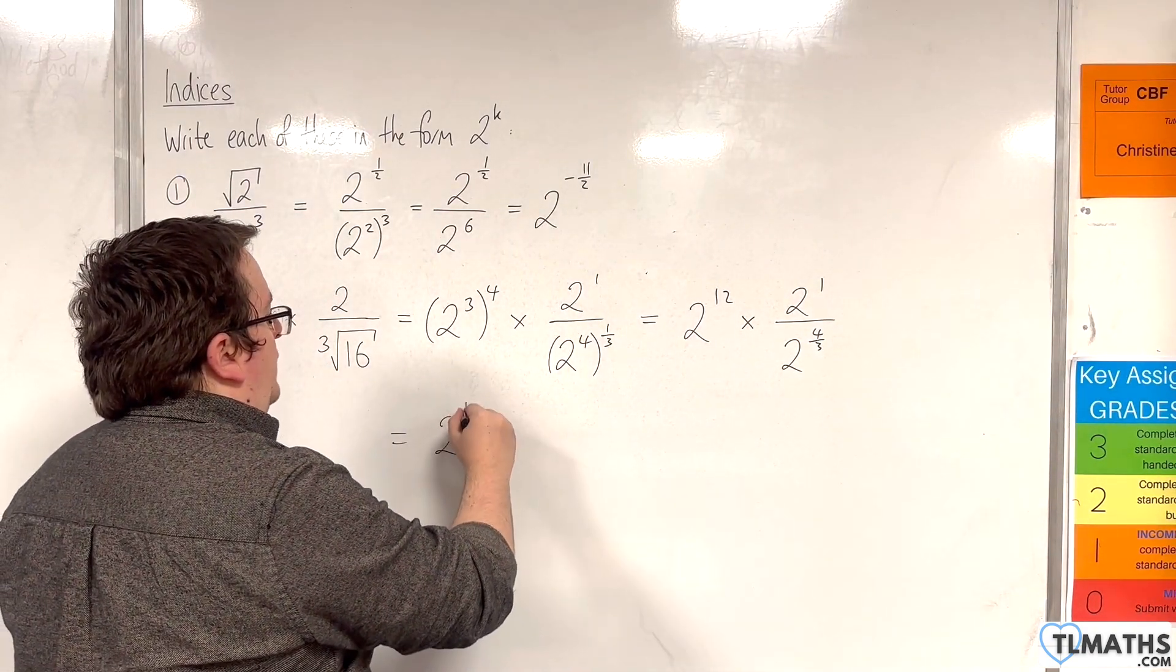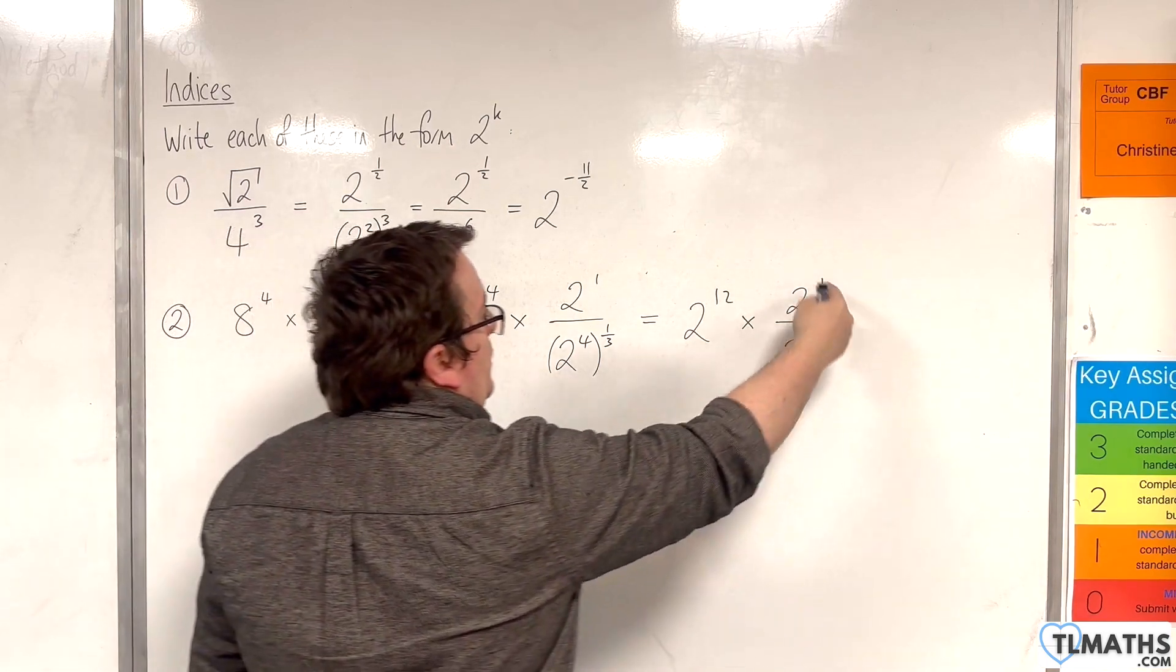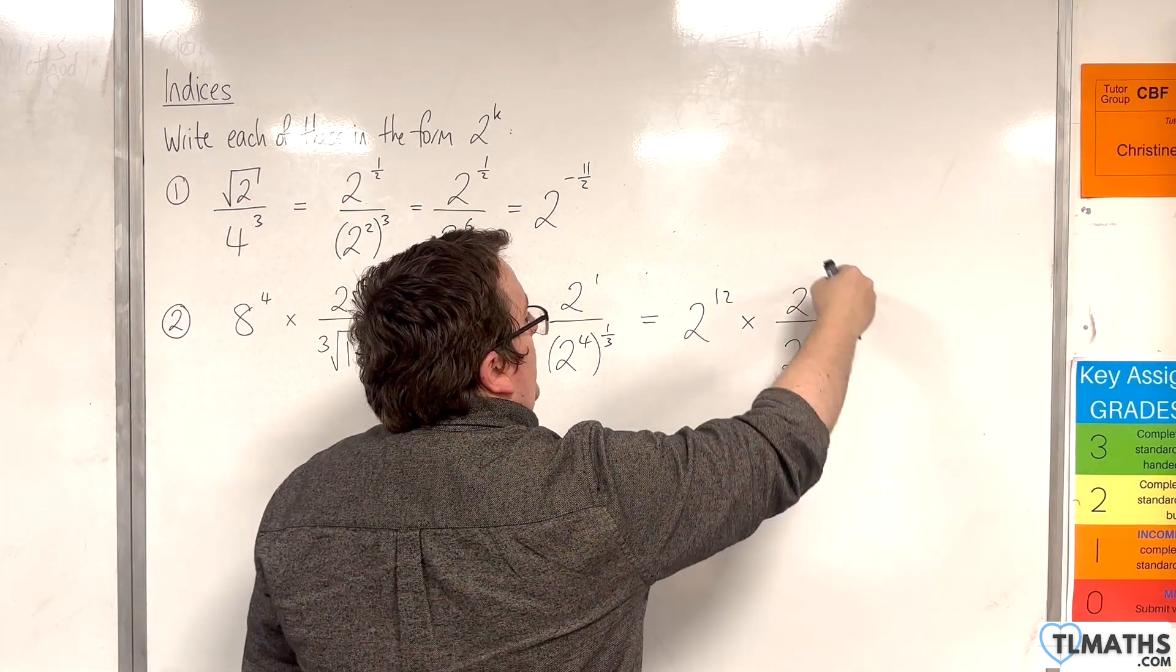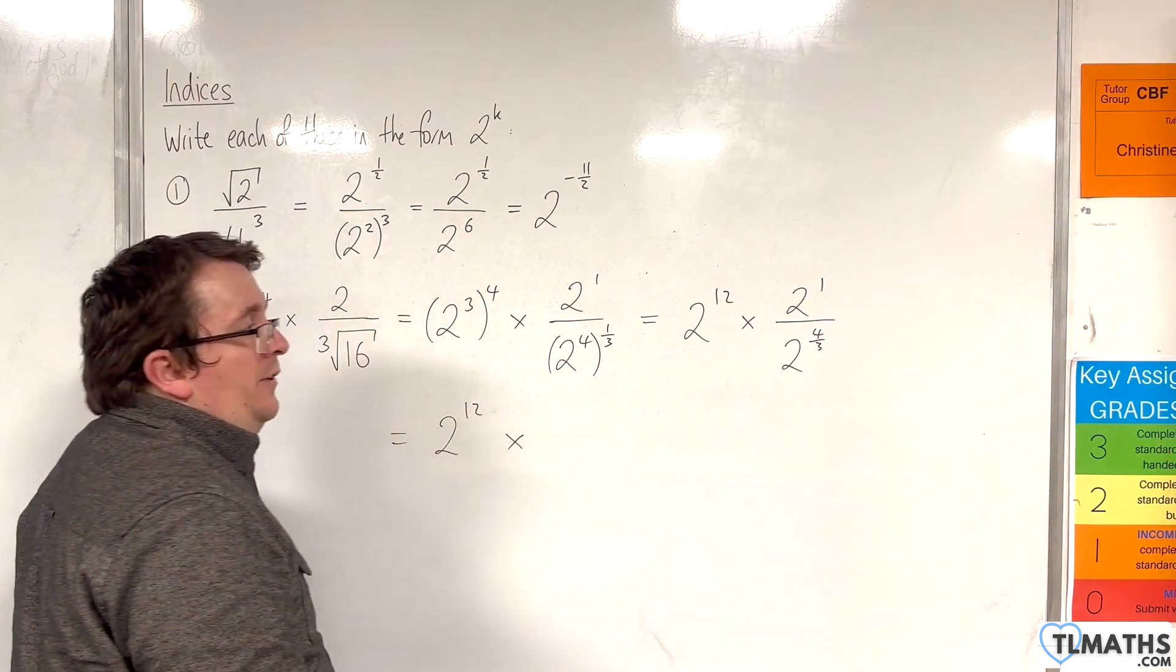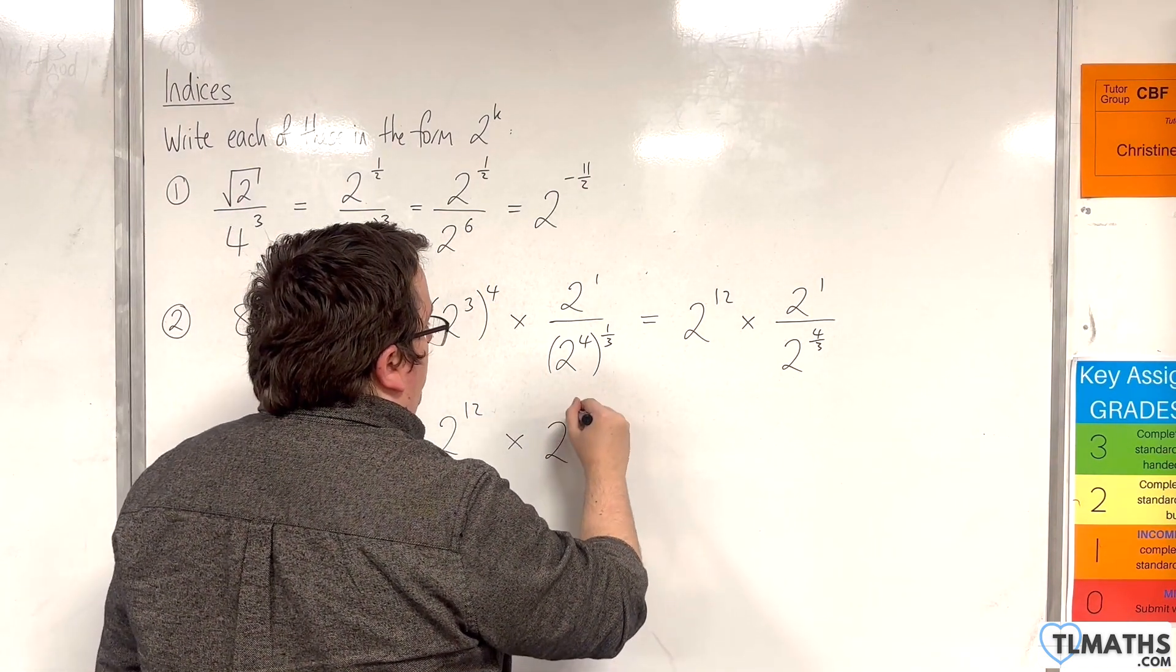Now I'm going to leave the 2 to the power of 12 as it is, and deal with this fraction first. We have 1 take away 4 thirds is minus a third, so 2 to the power of minus a third.